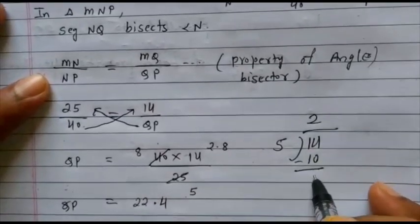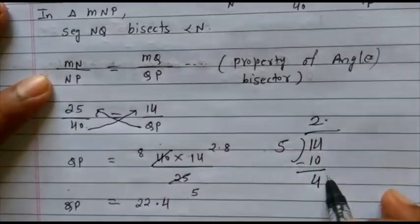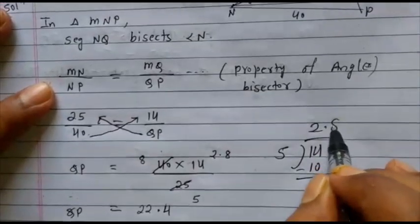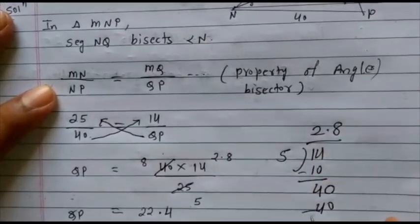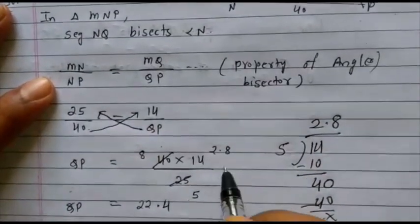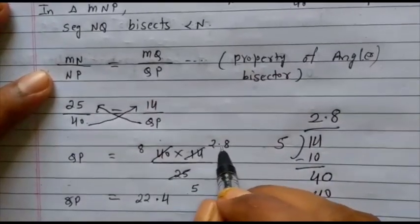5 into 10, 4 comes down. Put the point. Take 0. 5 into 40. So, what we got here? Nothing. That means what is the answer here? 2.8.